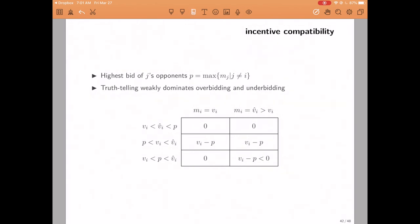In order to make our argument, we are going to need one piece of notation. Let P denote the highest bid of the opponents of player I. From I's perspective, P is going to play two roles. First of all, player I is going to win the auction if and only if his bid is greater than P. Secondly, in that case, the second highest bid would be exactly P, and therefore that would be the price that player I would have to pay.